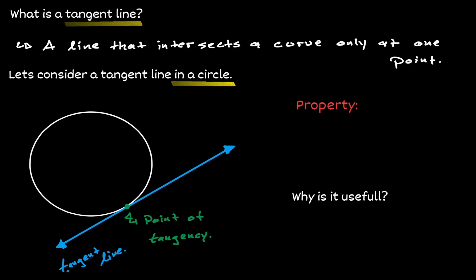A very important property between the tangent line and the circle is that the tangent line will always be perpendicular to the radius of the circle at the point of tangency.